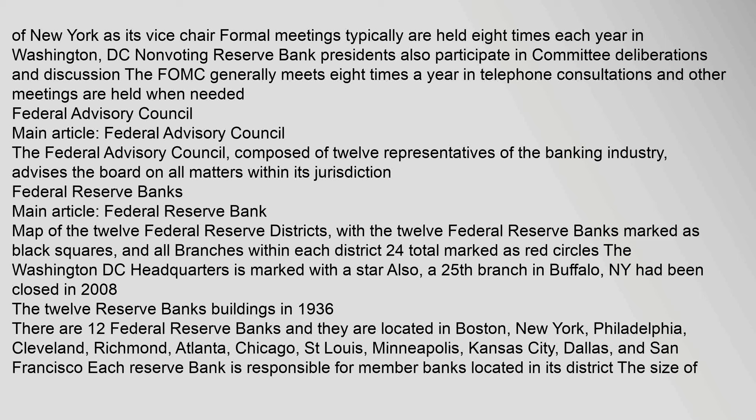The Federal Advisory Council, composed of twelve representatives of the banking industry, advises the Board on all matters within its jurisdiction. There are twelve Federal Reserve Banks, and they are located in Boston, New York, Philadelphia, Cleveland, Richmond, Atlanta, Chicago, St. Louis, Minneapolis, Kansas City, Dallas, and San Francisco. Each Reserve Bank is responsible for member banks located in its district, and the size of each district was set based upon the population distribution of the United States when the Federal Reserve Act was passed.